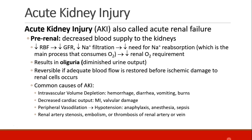When we talk about acute kidney injury, we can categorize it into pre-renal, renal, or post-renal. Pre-renal means that something has happened prior to the kidneys, usually involving decreased blood supply. So if renal blood flow is decreased and GFR and sodium filtration are decreased, then there's less need for sodium reabsorption, and that's the main process that consumes oxygen in the kidney cells, so your kidney has a decreased renal oxygen requirement. And this results in oliguria, which is diminished urine output.